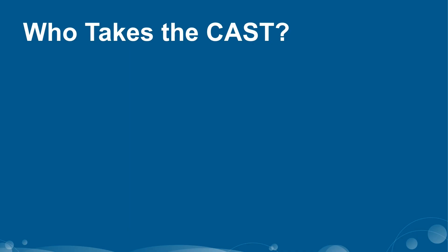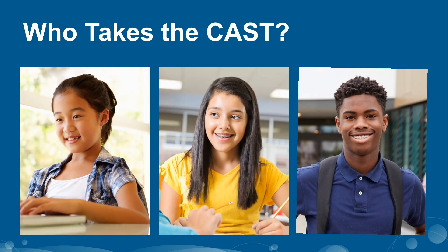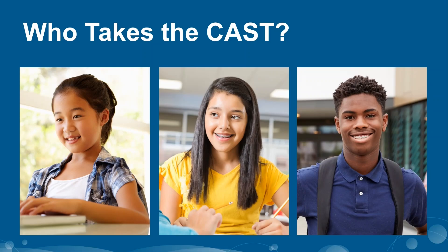So who takes the CAST? The CAST is given to eligible students in grades 5 and 8, and once in high school — for example, grade 10, 11, or 12. Some students in grades 5, 8, and high school will take the California Alternate Assessment, or CAA, for science instead of the CAST if they are identified in their Individual Education Plan or IEP.